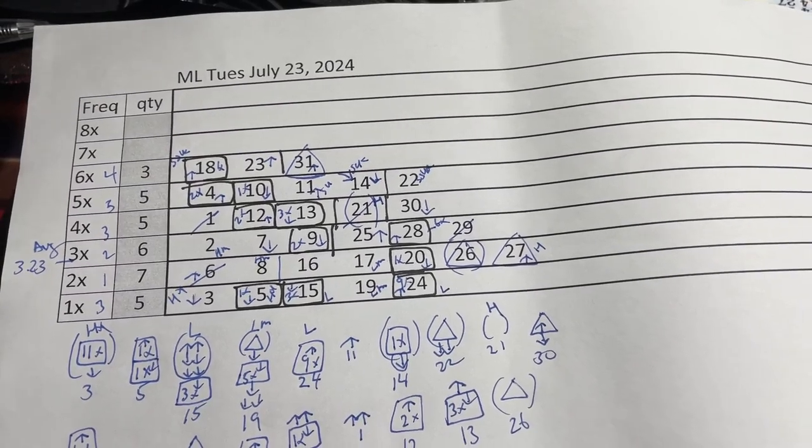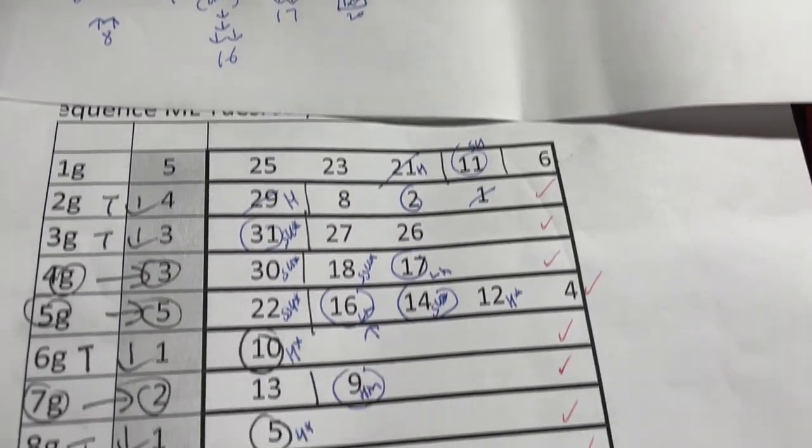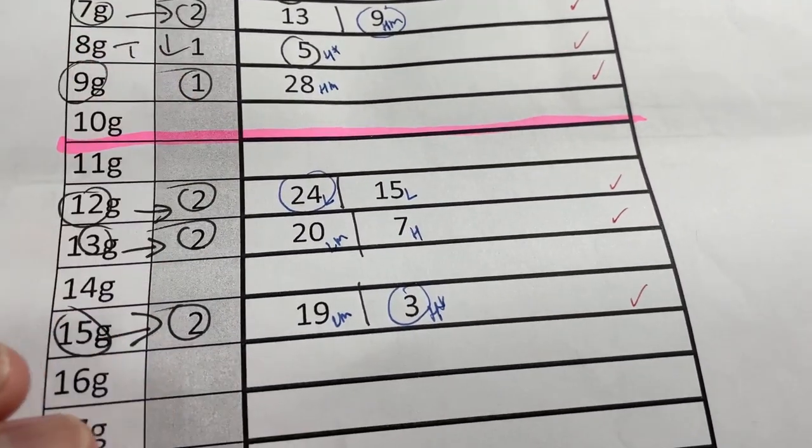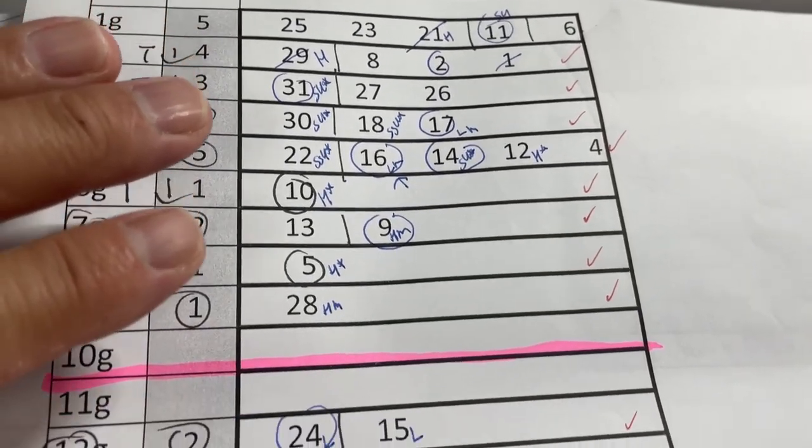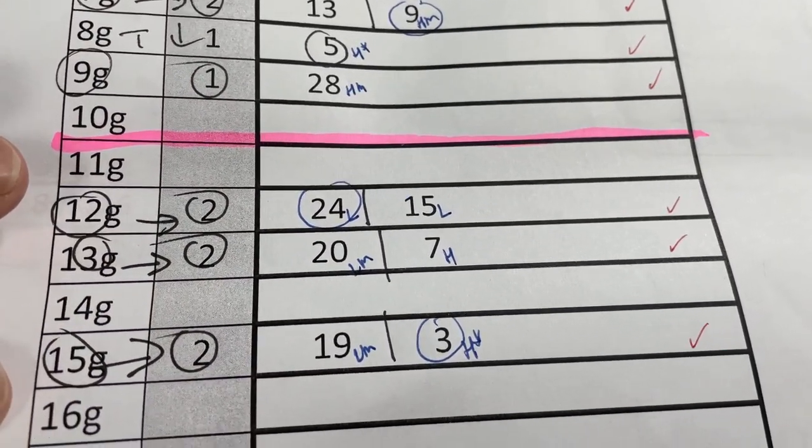You're looking at my mini-lotto worksheet for Tuesday, July 23rd. I've been working very hard trying to find the best numbers for us. Anything below this pink line are considered cold numbers, and anything above it are warm to hot numbers. I usually choose at least one cold number. In this case, there are several.